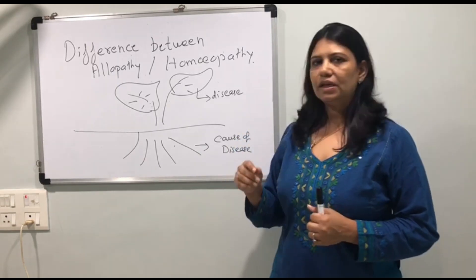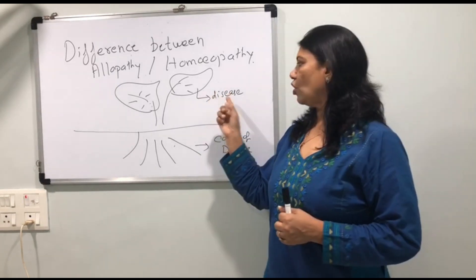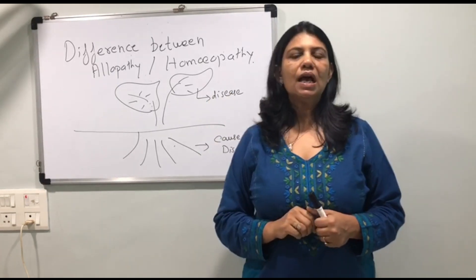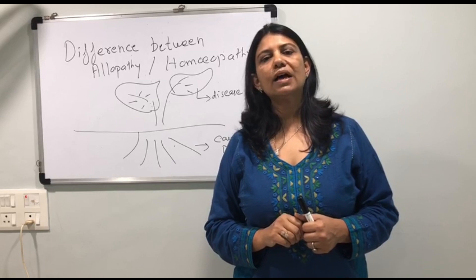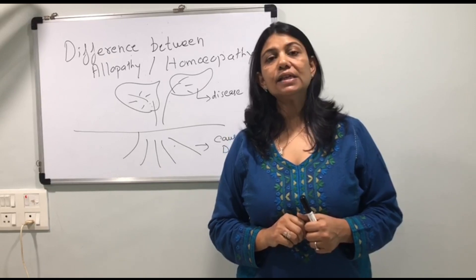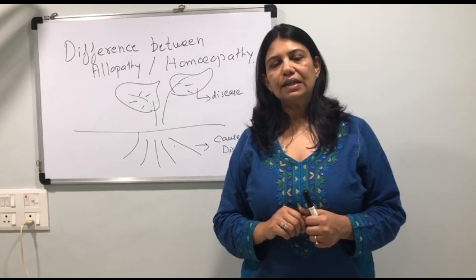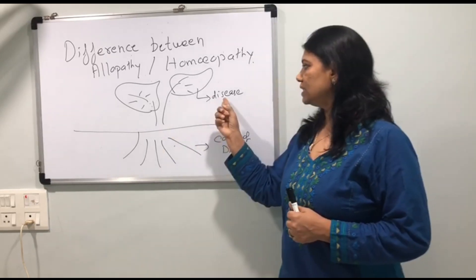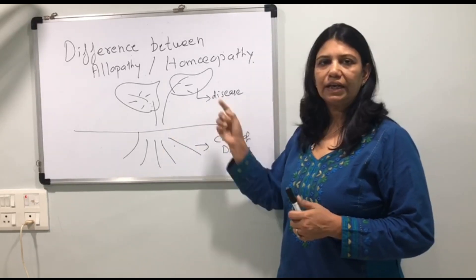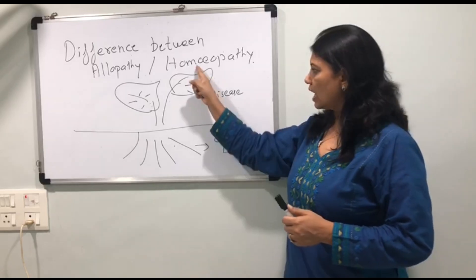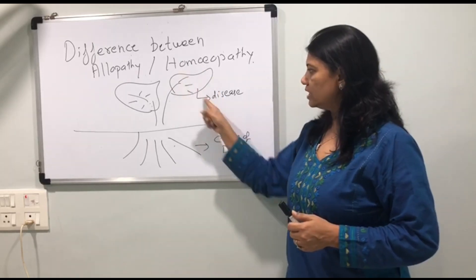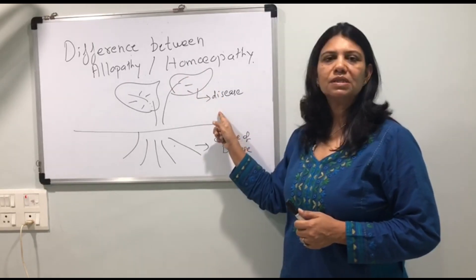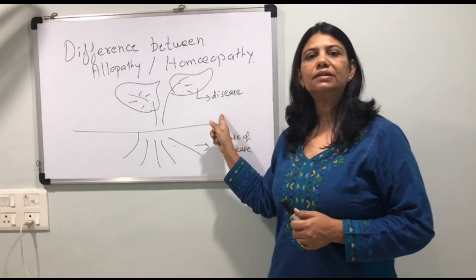Once you develop a disease, allopathic science treats the disease. That means, once the disease has been started, they just cut short the disease's symptoms and start the treatment.